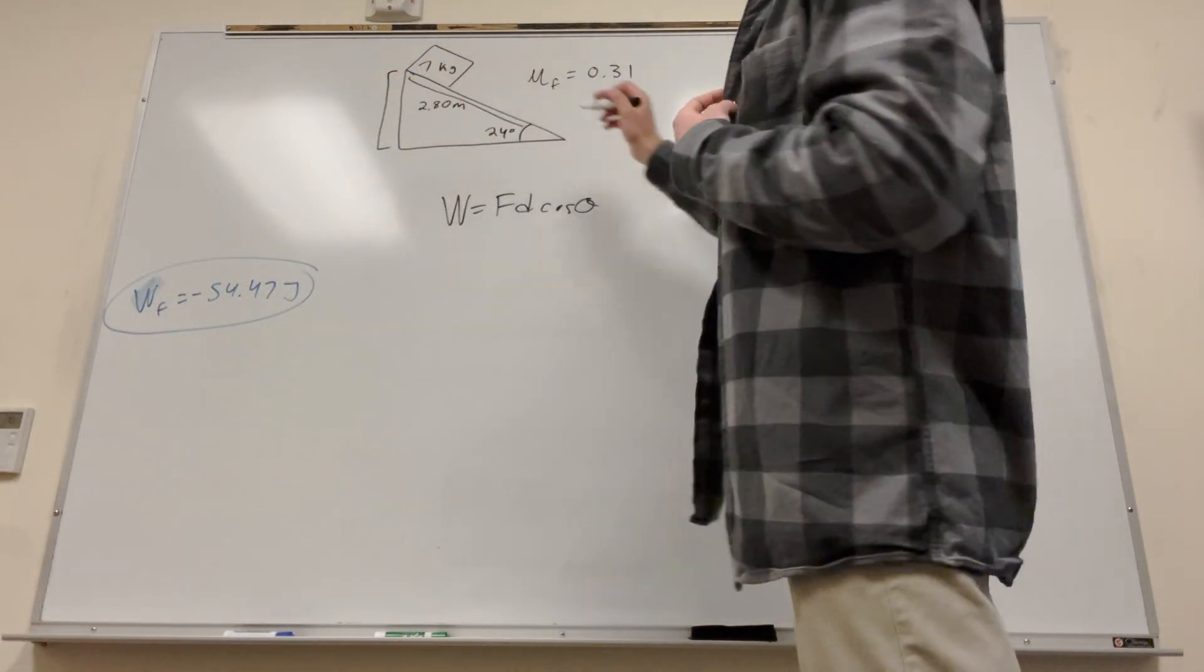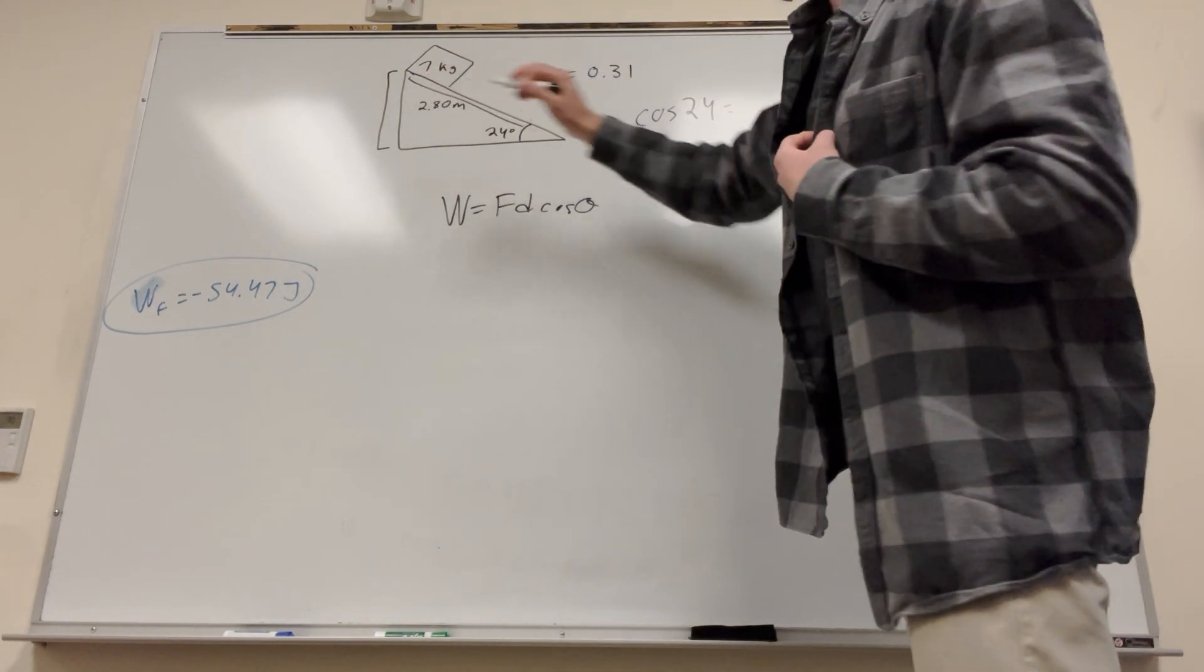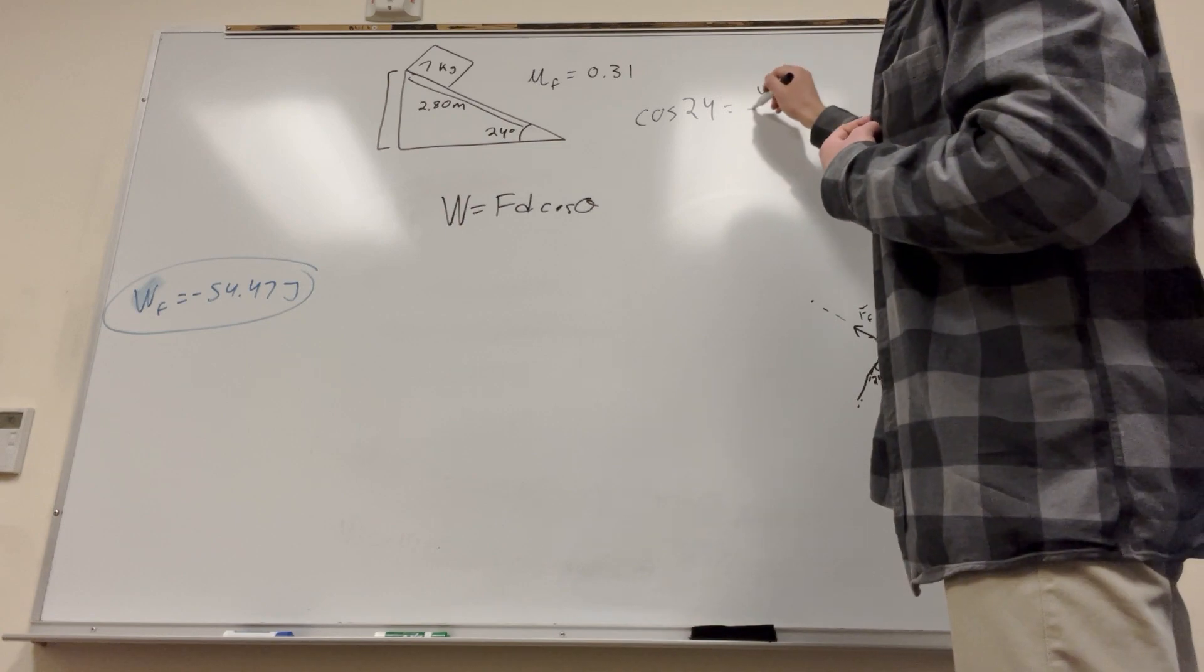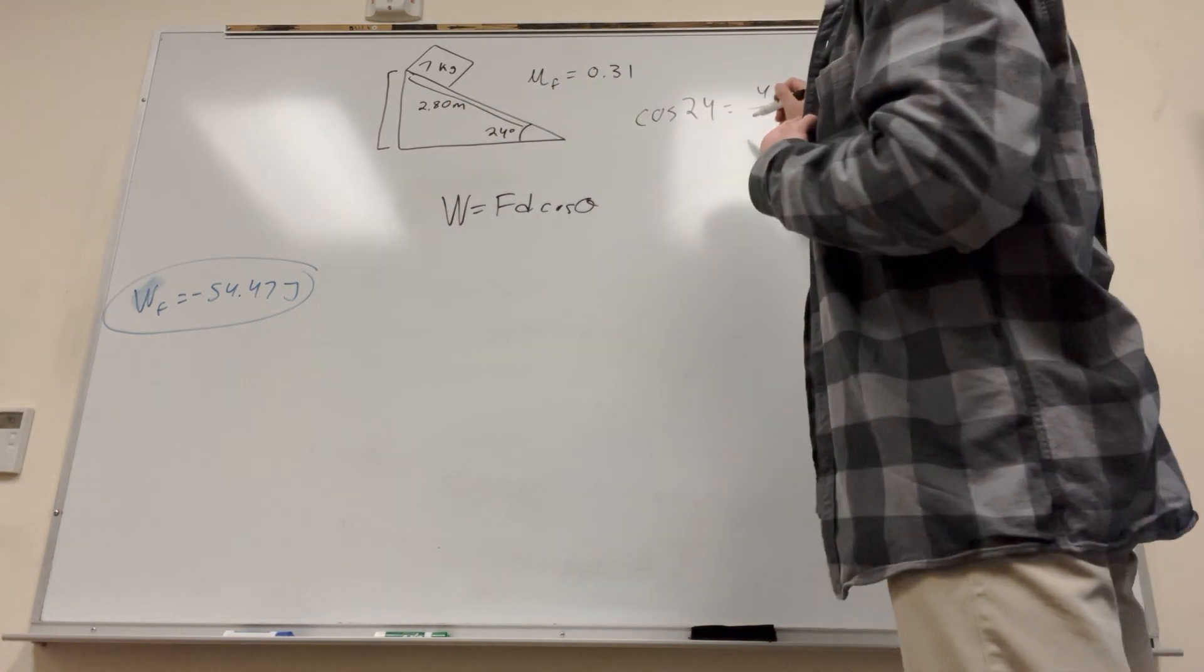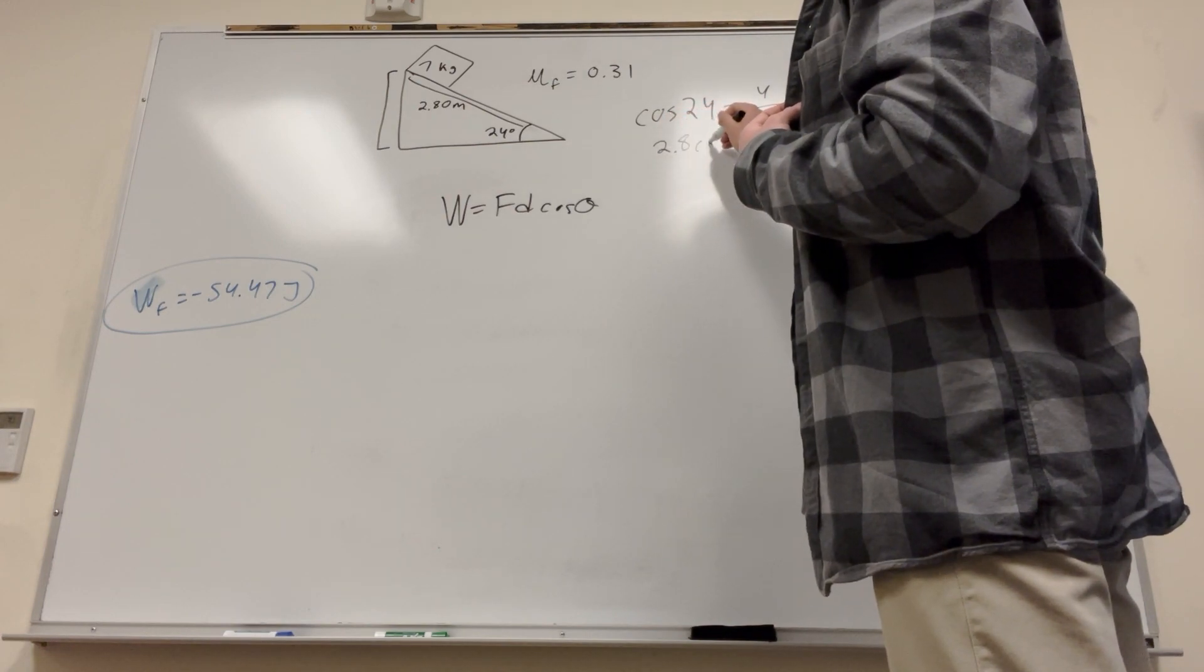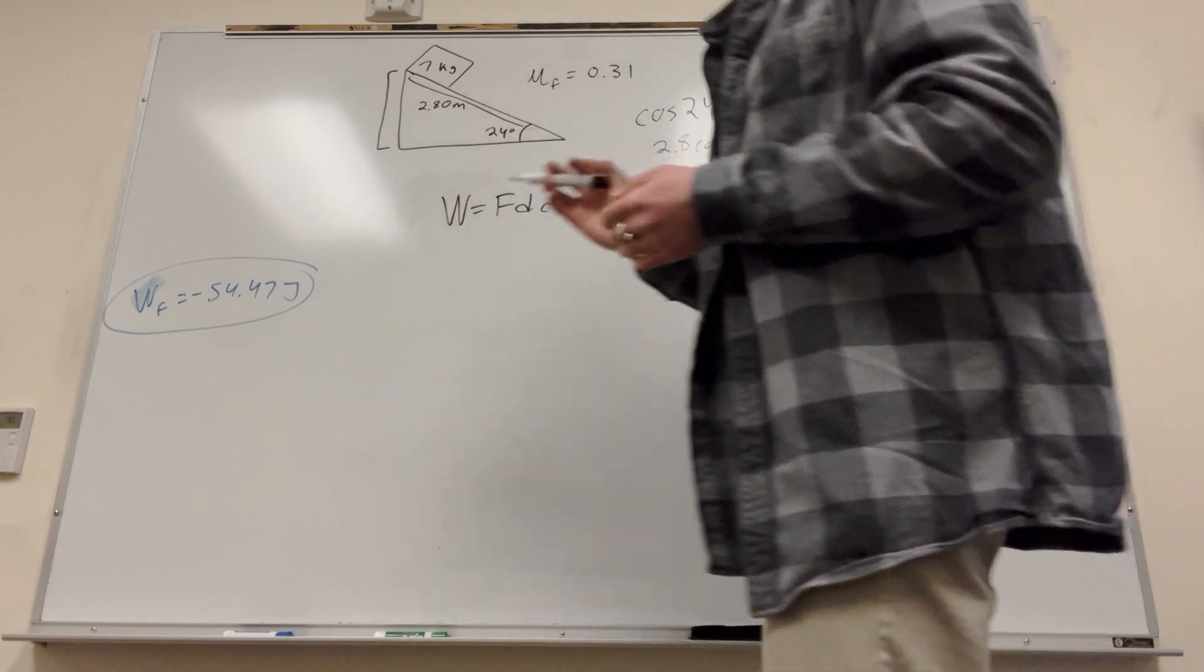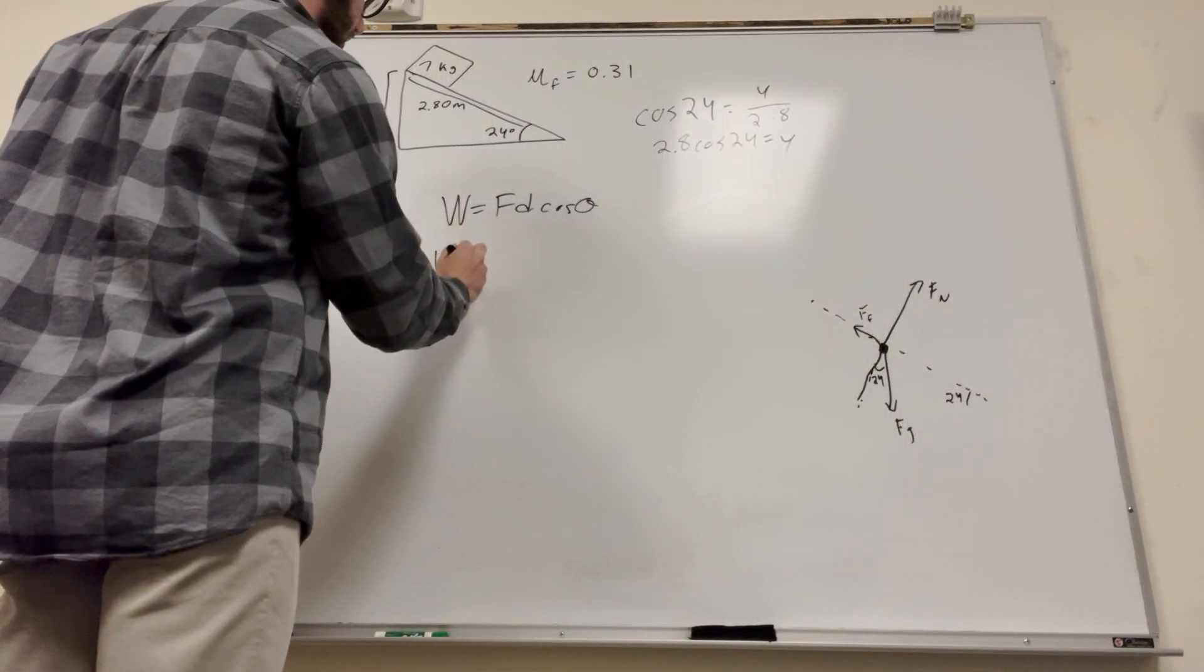It goes this distance is what we're trying to measure. But what you're trying to find here, you can use SOHCAHTOA. So because it's the opposite, we're going to use cosine. So sine of 24 is equal to opposite over hypotenuse. So I'm going to call this y over 2.8. So then we move over 2.8. Cosine of 24 times 2.8 is equal to y. Okay, great. So that's the distance we covered.